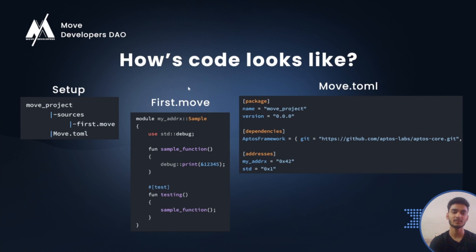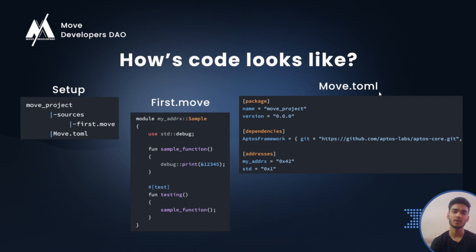This is how our code will look in Move programming language. You can see the file uses a .move extension. There is also a Move.toml file, which is a manifest file that includes important metadata like the project name, version, important dependencies, and your addresses.